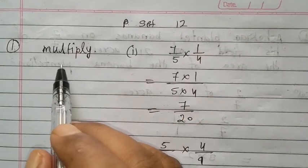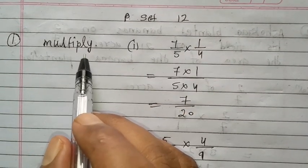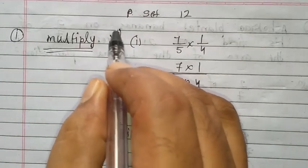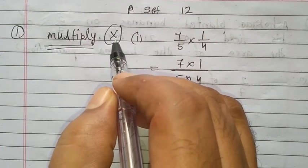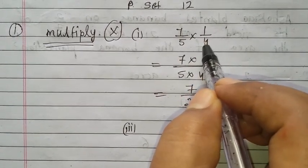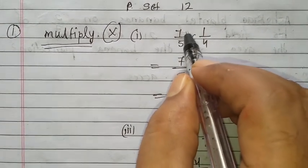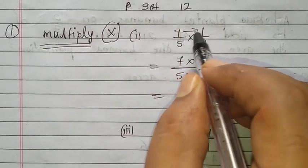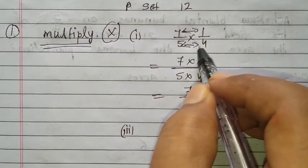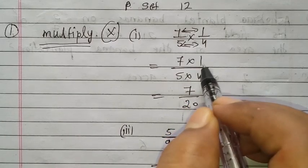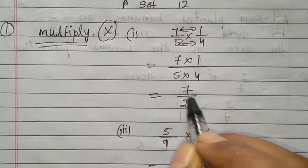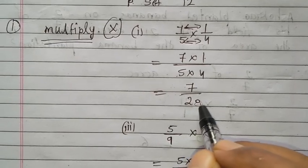Practice Set 12, question number 1: Multiply. The next operation is multiply. Multiply means this cross sign — we multiply 2 fractions. Now, 7 upon 5 multiplied by 1 upon 4. Numerator multiplied with the numerator and denominator multiplied with the denominator. So write: 7 into 1 upon 5 into 4 = 7 upon 20.